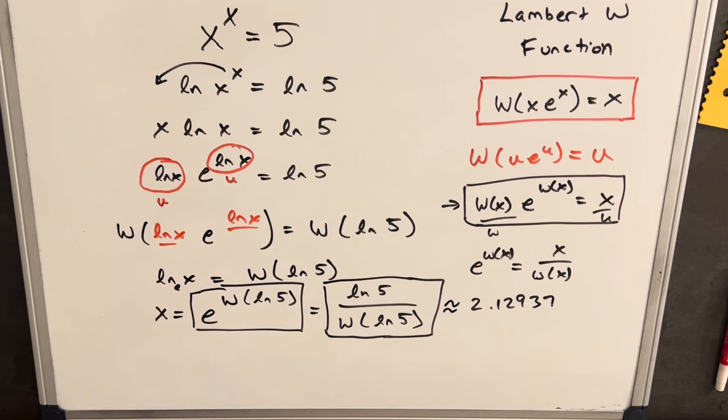And then the last question we have is, are there any more solutions? Well, if we do look at a graph of this, it does seem, you can kind of see that there's just one solution. But the other thing is, okay, we have this Lambert W function, which is a multi-value function.